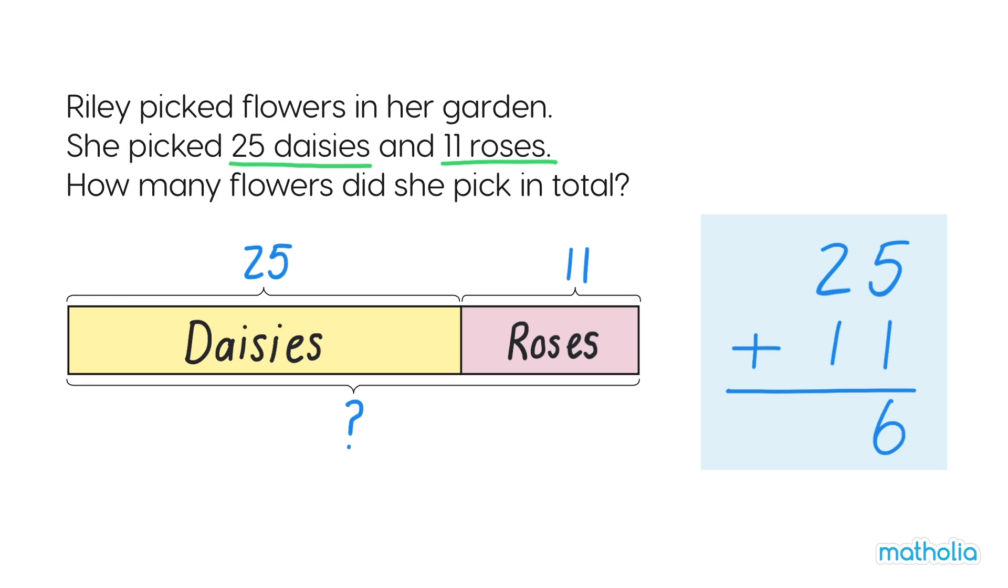Now add the tens. Two tens, add one ten, is three tens. 25 add 11 is 36. So Riley picked 36 flowers in total.